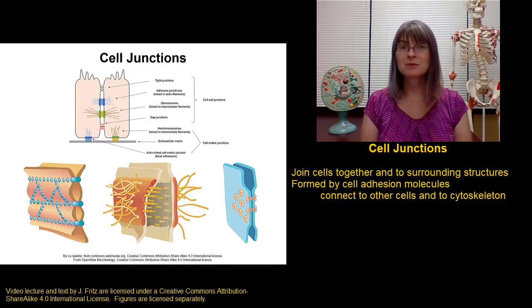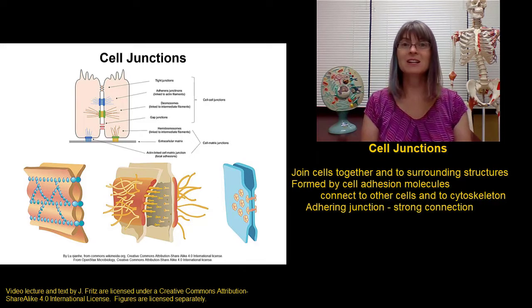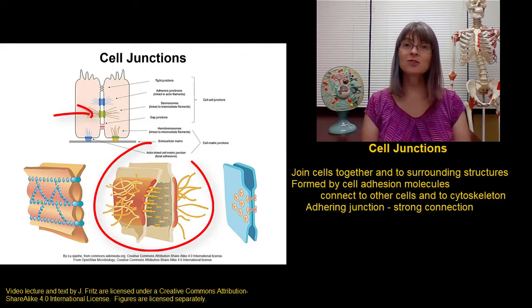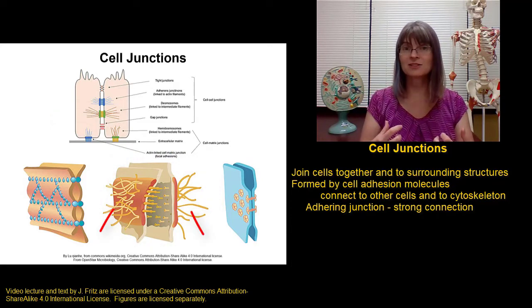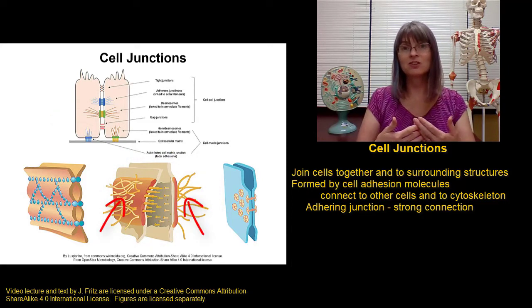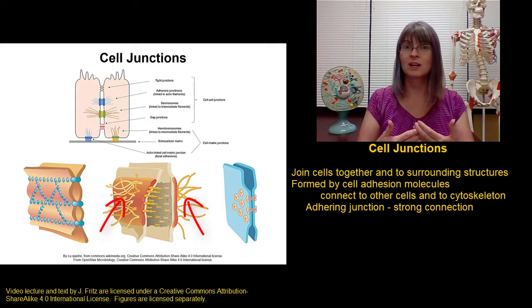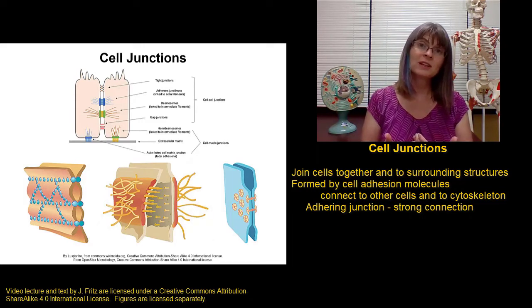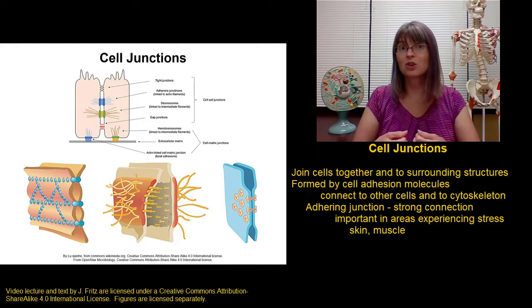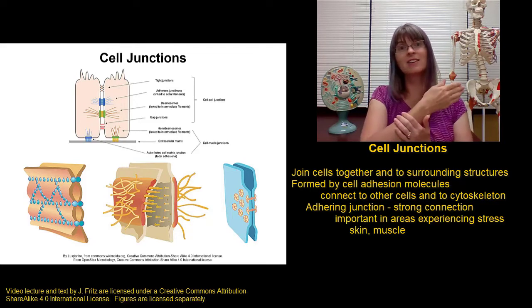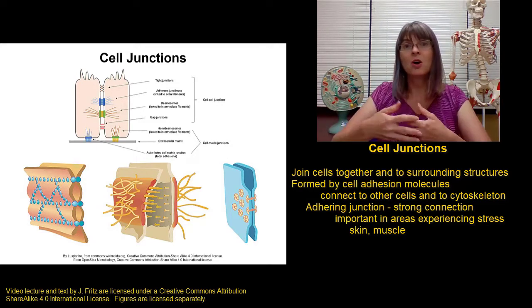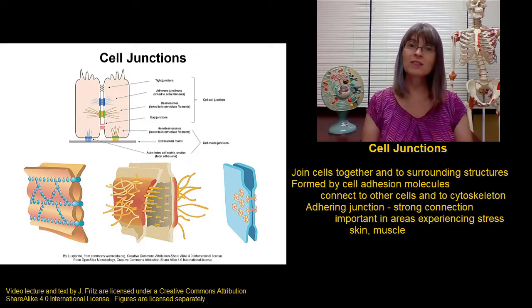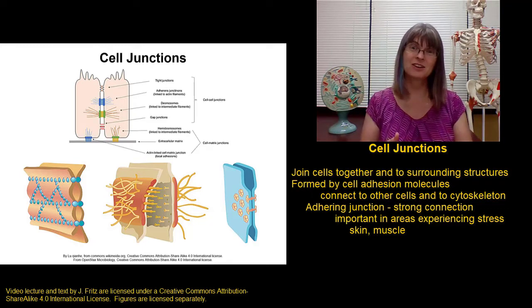There are three main types of cell junctions with different functions. First we have the adhering junctions. Adhering junctions are about making a strong connection between cells. These are connected to a lot of cytoskeletal filaments and the connections between the cells are strong. These are particularly important in any areas of the body that experience a lot of stress that could pull cells apart. Things like the skin or the muscles that are under a lot of force as they encounter the environment or during a contraction. You want those cells held together with a lot of adhering junctions.